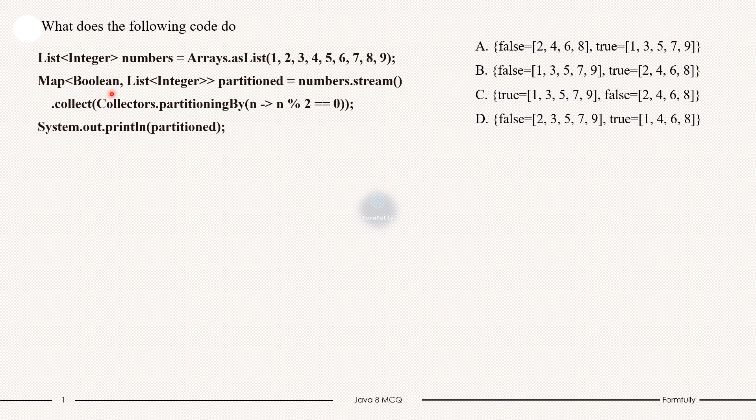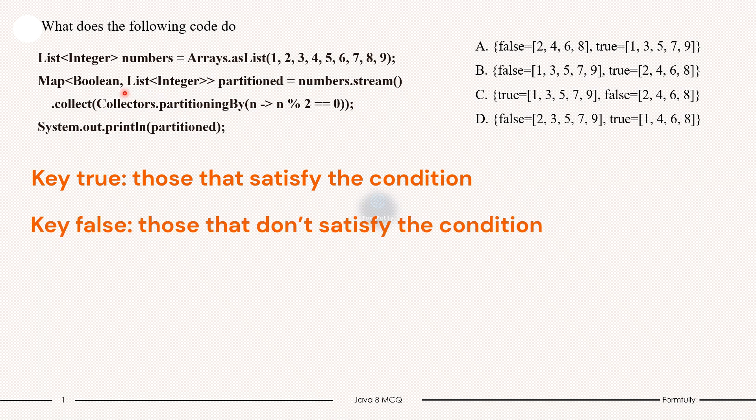So the result is a Map<Boolean, List> where key true contains the list of all even numbers, those that satisfy the condition, and key false contains the list of all the odd numbers, those that don't satisfy the condition.